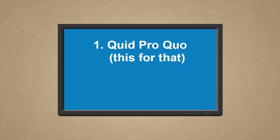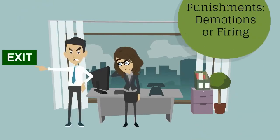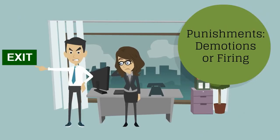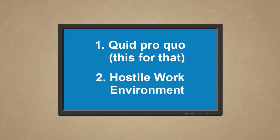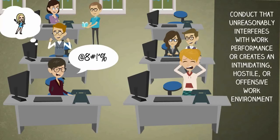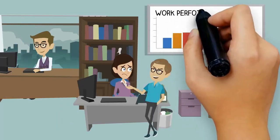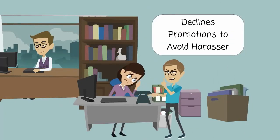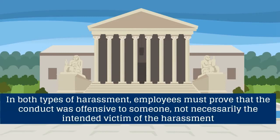There are two categories of sexual harassment. The first is quid pro quo — literally 'this for that' — which occurs when a boss uses job rewards such as raises or promotions, or punishments such as demotions or firing, to force employees into a sexual relationship or act. The second is hostile environment, defined as conduct that unreasonably interferes with work performance or creates an intimidating, hostile, or offensive work environment.